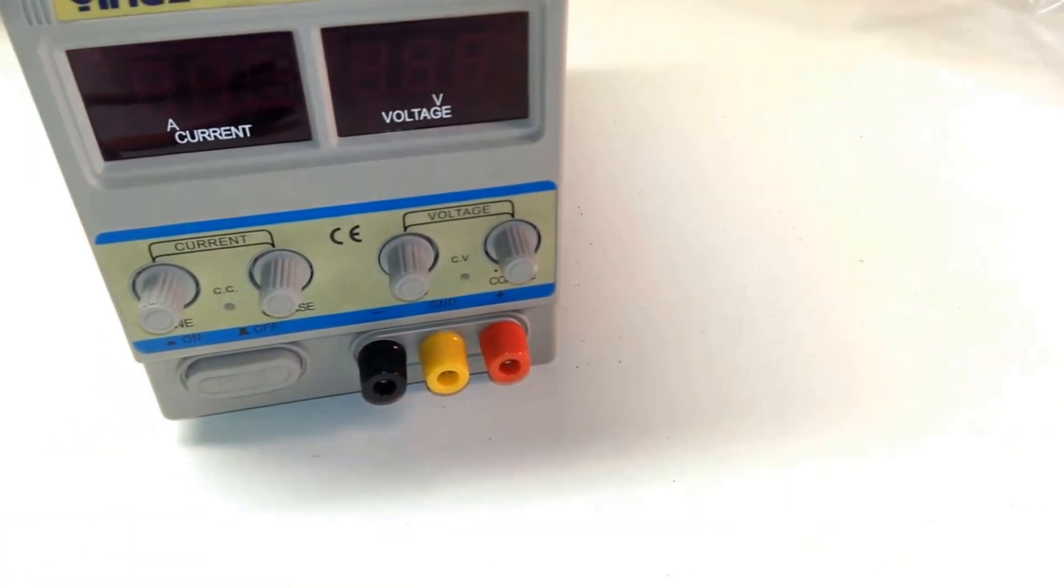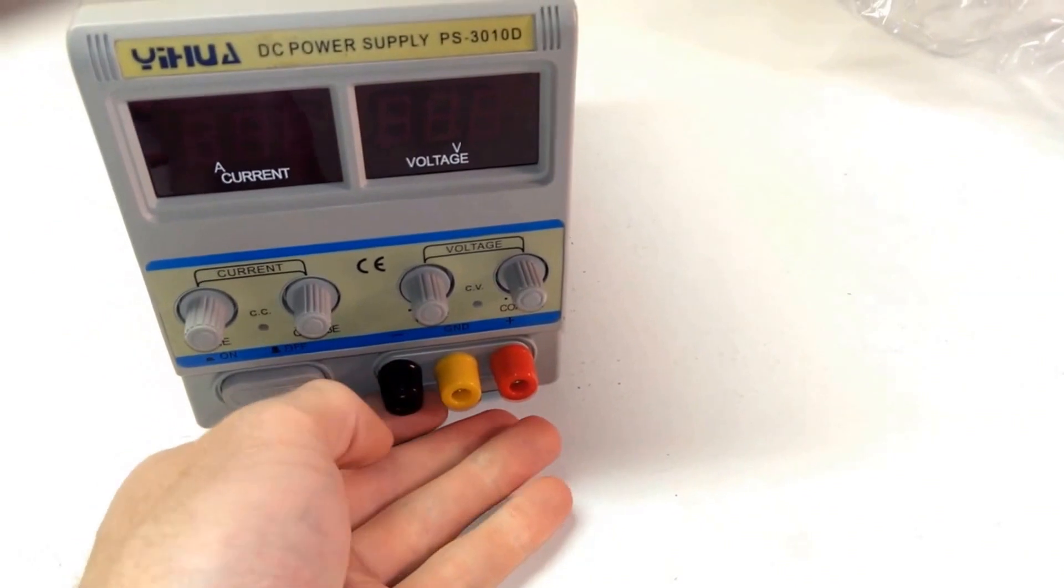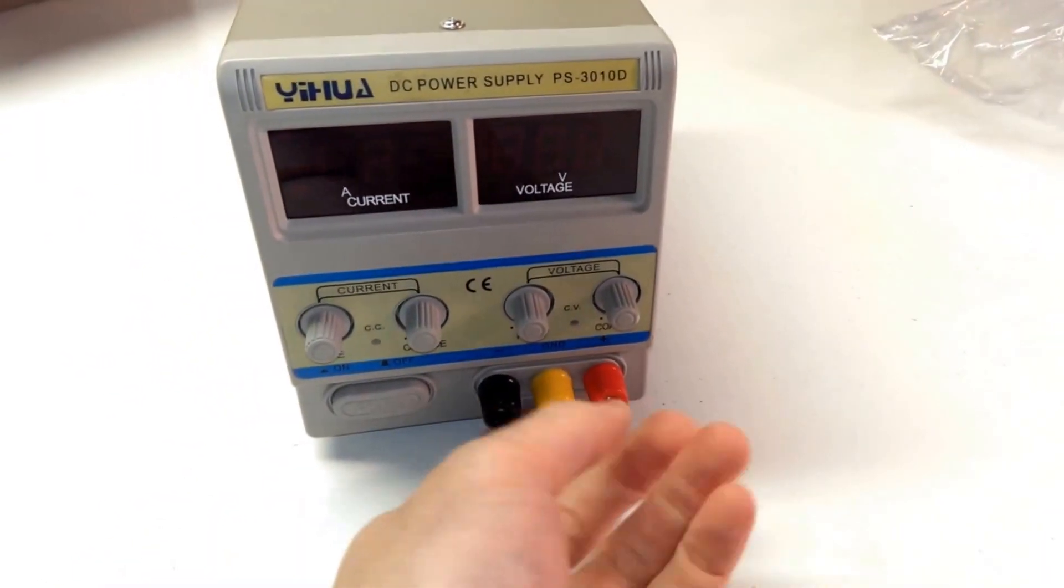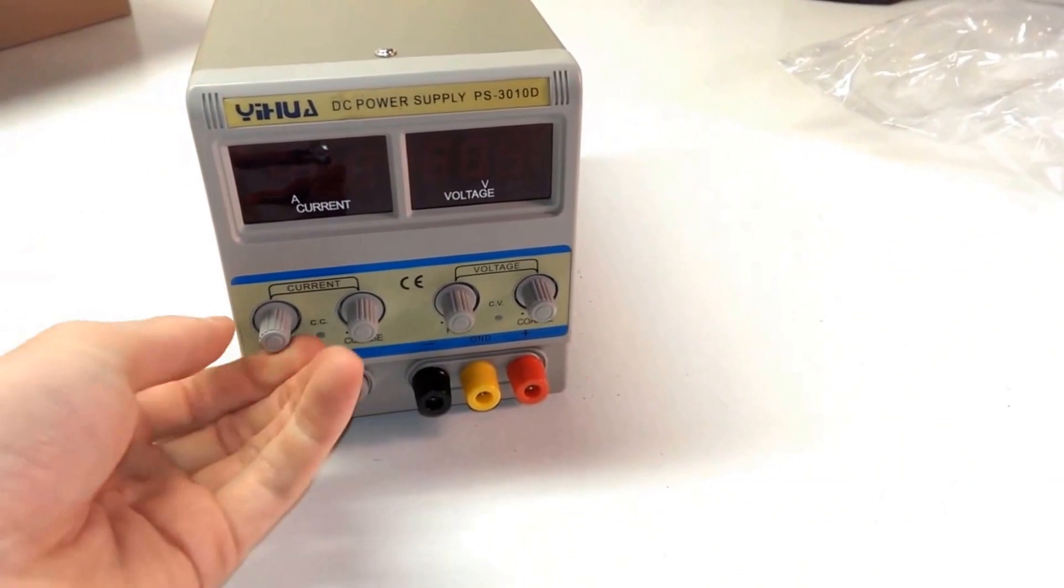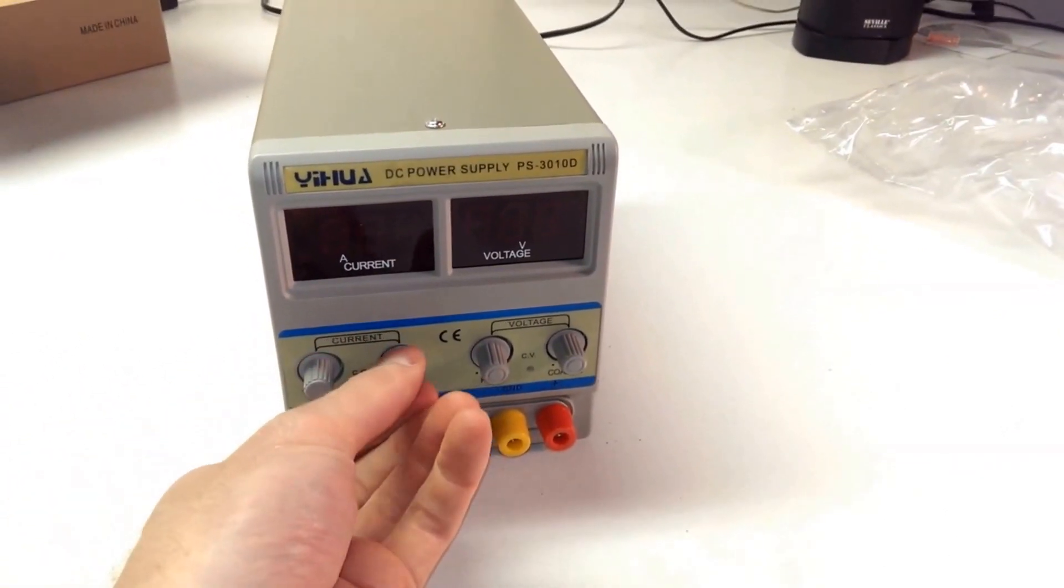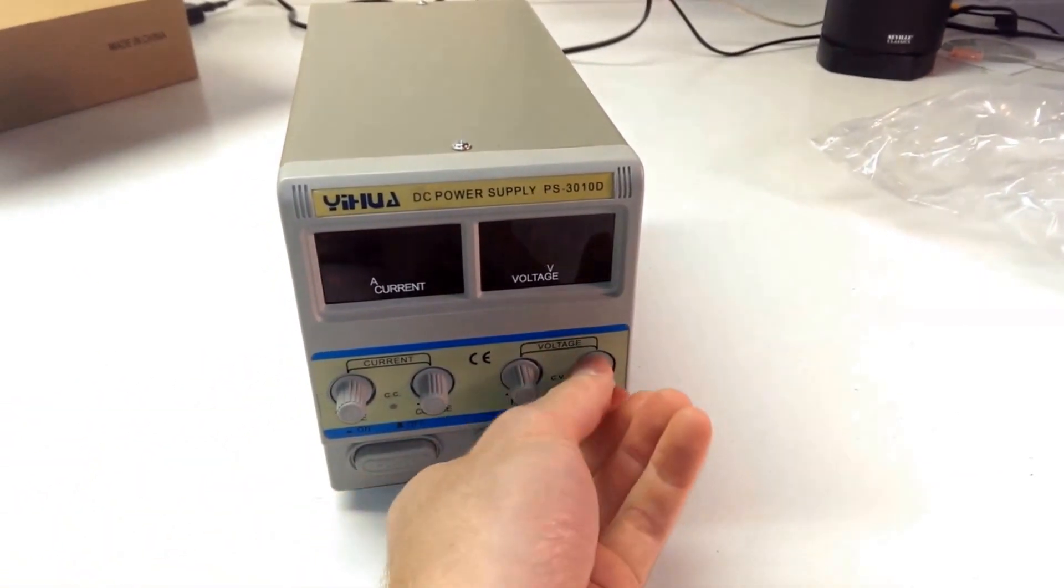Knobs here. Looks like we got positive, negative, and ground. Power button. Knobs have a pretty nice feel to them.